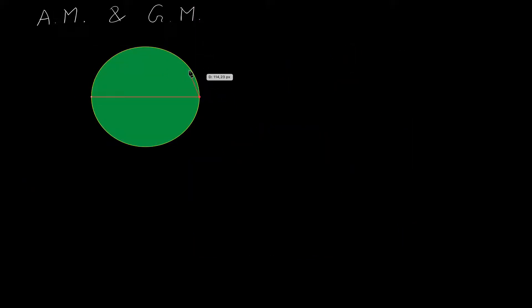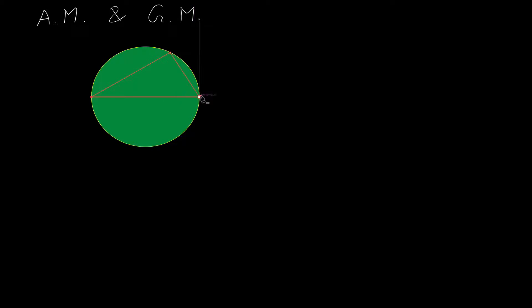Let us now take a step further. Consider a circle with a diameter. When you study the chapter on circles, you will learn that if you draw a triangle with two points at the ends of a diameter and one point on the circle, then the angle at the point on the circle is always 90 degrees — this can be proven and we will revisit it in the circles chapter.